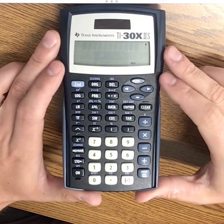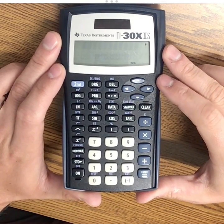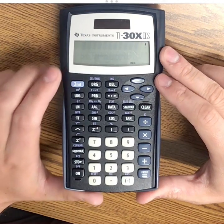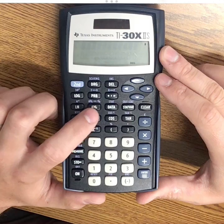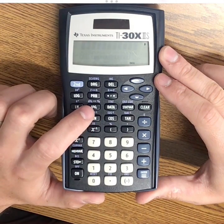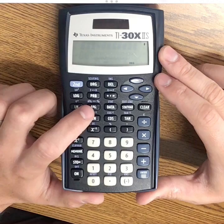In order to write mixed numbers on the TI-30x calculator, you have to use that same fraction button, A and then the B over C for the fraction, to write a mixed number just like you would for a regular fraction.